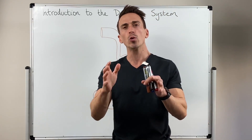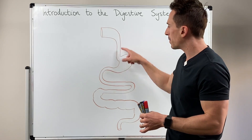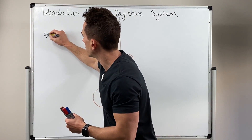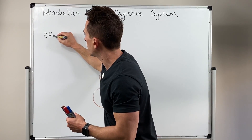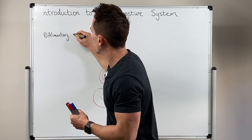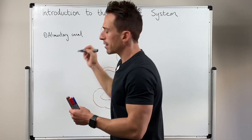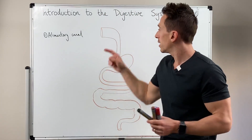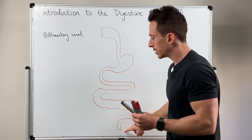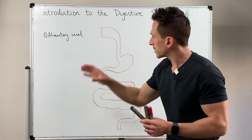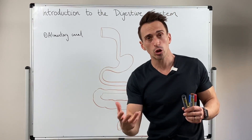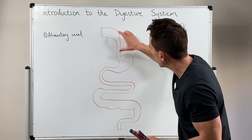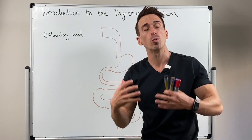Now when I say digestive tract I'm also referring to the alimentary canal, and that's the primary component of the digestive system — worth writing down. The alimentary canal is this hollow muscular tube that goes from the mouth and snakes its way all the way down to the anus. Now this alimentary canal, while it's a muscular tube, also has other layers to it that allow for it to have many different functions depending on what aspect of the tube we're referring to.